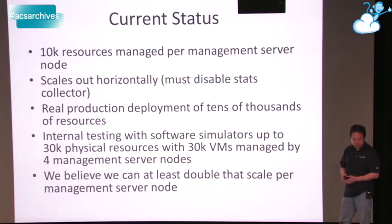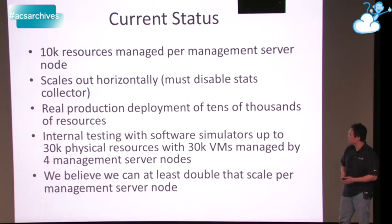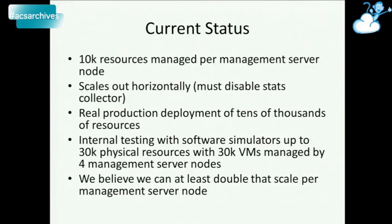We've established about 10k resources managed per management server node, which pretty much scales out horizontally. Today you do have to disable one particular component in our stats collector in order for it to scale out horizontally. We have real production deployments of tens of thousands of resources managed. In our internal software simulator we've been able to drive up to about 30k physical resources with about 30k VMs — about 1 VM per resource — with 4 management server nodes, and we believe we can at least double that scale with some changes.